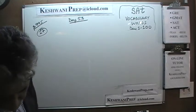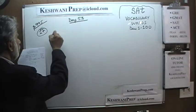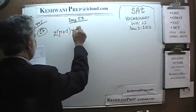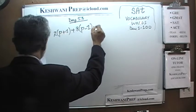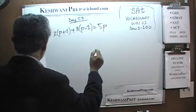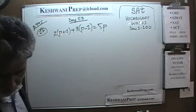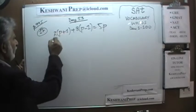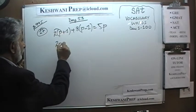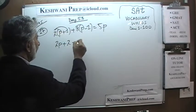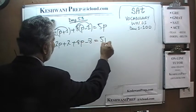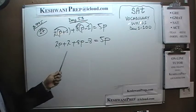Number 17 is a very straightforward equation: 2 times (p plus 1) plus 8 times (p minus 1) is equal to 5p. The question simply is: what is the value of p? It's a straightforward simple linear equation. Let's open it up: there's 2p plus 2 plus 8p minus 8 has to equal 5p. Let's bring all the p's to one side.